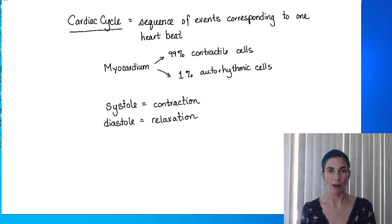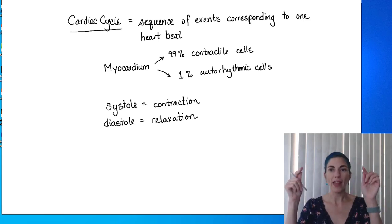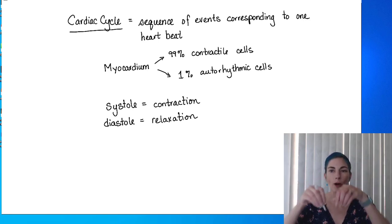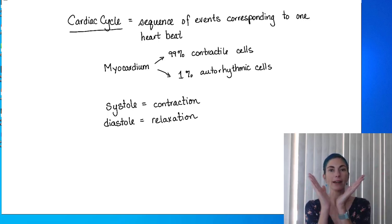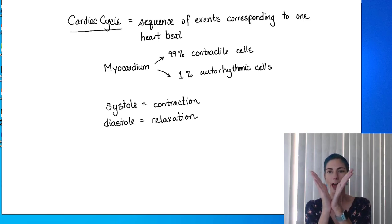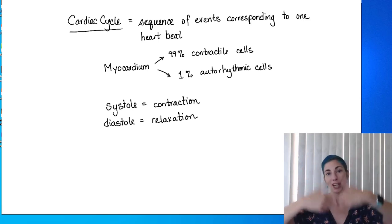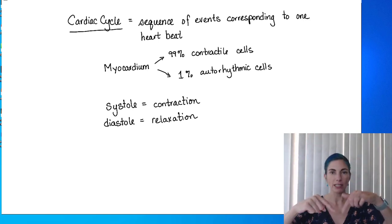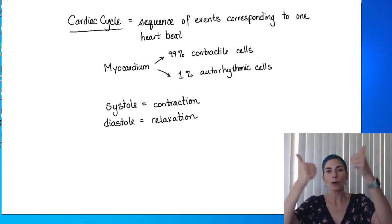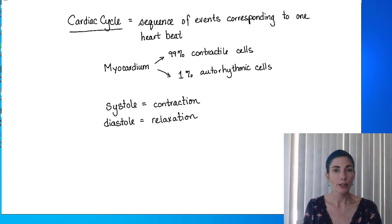The basics of the cardiac cycle: the atria — both left and right — contract first, going through systole, pushing blood down into the ventricles. Then the ventricles contract while the atria begin their diastole. The ventricles squeeze from the bottom up, like squeezing a tube of toothpaste from the bottom, ejecting blood out into the respective arteries. So: atria contract first, push blood into ventricles; ventricles squeeze bottom-up, ejecting blood out into the arteries.